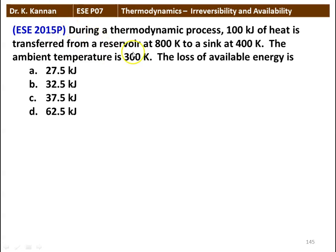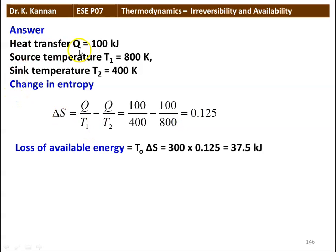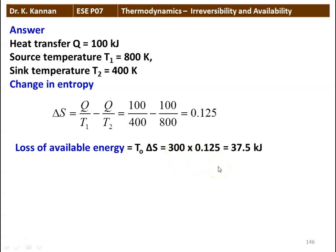The next question: during a thermodynamic process, 100 kilojoules of heat is transferred from a reservoir at 800 Kelvin to a sink at 400 Kelvin. The ambient temperature is 300 Kelvin. The loss of available energy is — options: 27.5, 32.5, 37.5, and 62.5 kilojoules. The answer is 37.5 kilojoules. Solution: delta S equals Q/T2 minus Q/T1: 100/400 minus 100/800 equals 0.125. Loss of available energy equals T0 times delta S: 300 times 0.125 equals 37.5 kilojoules.